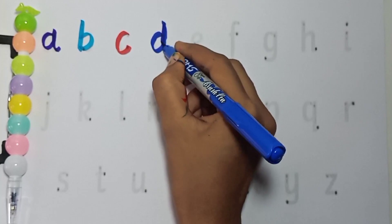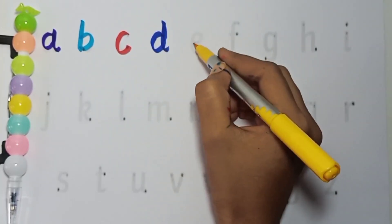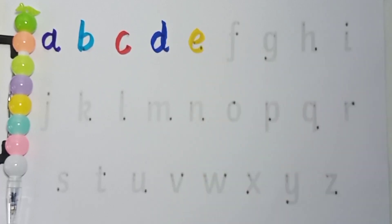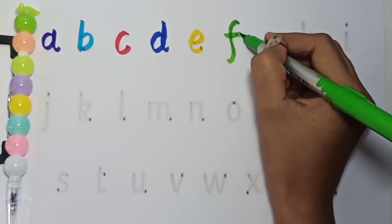Dark blue color, D, D for dog. Yellow color, E, E for elephant. Light green color, F, F for fish.